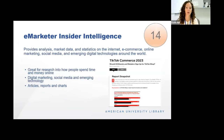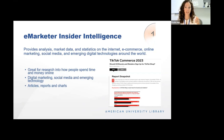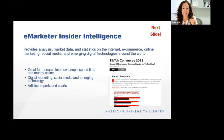eMarketer Insider Intelligence is a great tool for researching how people spend their time and money online. It covers a number of industries, but its bread and butter is really digital marketing, social media, and digital advertising. It provides analysis, market data, and statistics on internet, e-commerce, online marketing, social media, and emerging tech. One of its great strengths is its reports and charts — it has shorter articles on recent trends and observations, but its reports are quite in-depth. I've screenshotted the opening page for its report on TikTok commerce in 2023, and you can see a chart showing where adults are likely to make purchases directly — Gen Z versus total — with Instagram, YouTube, and TikTok shown.